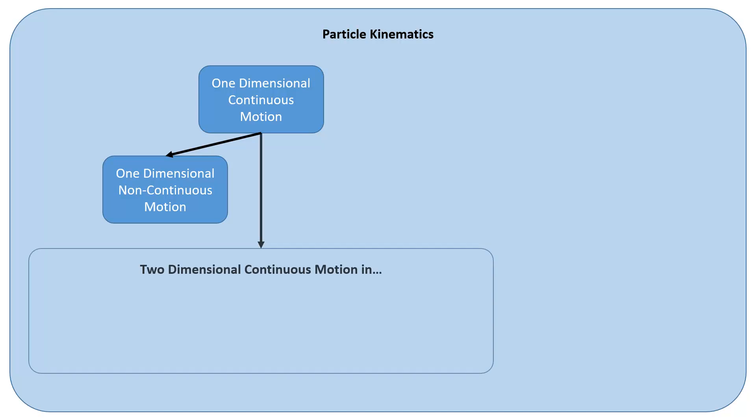Another option is to branch out and go to two dimensions. So when we deal with two-dimensional continuous motion, we need to decide what coordinate system we're going to use. We can use the regular rectangular coordinate system. This would be like X and Y.